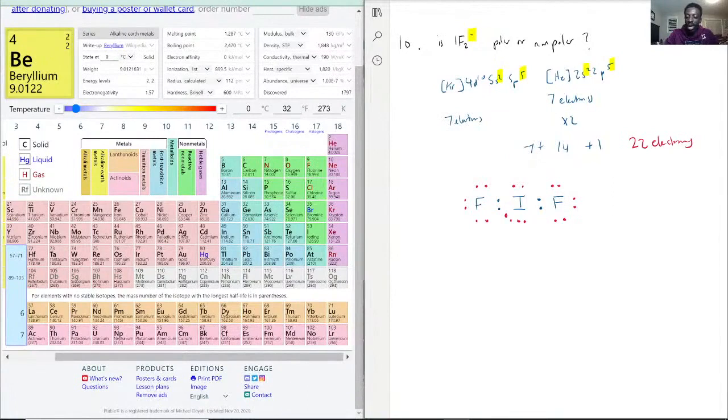What just happened here is iodine actually does not care about the octet rule in this case. It will willingly have 10 electrons around it because it's still stable there.